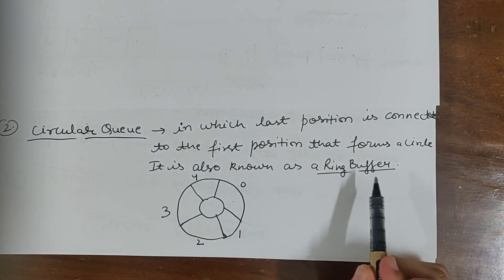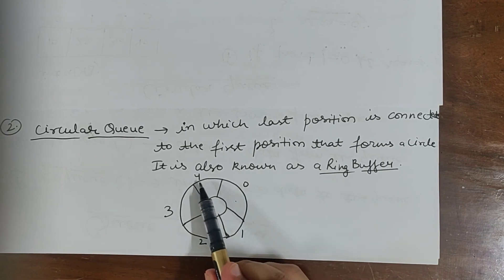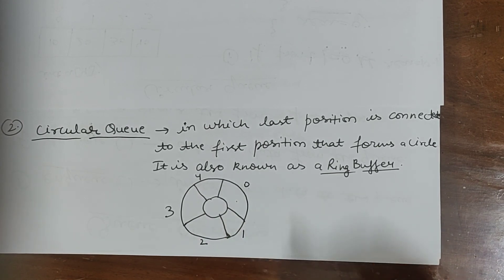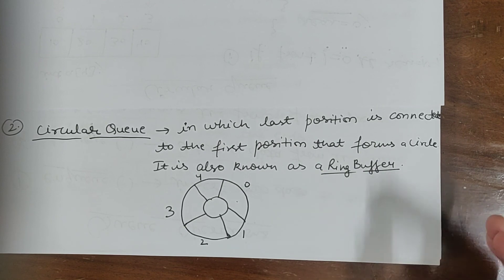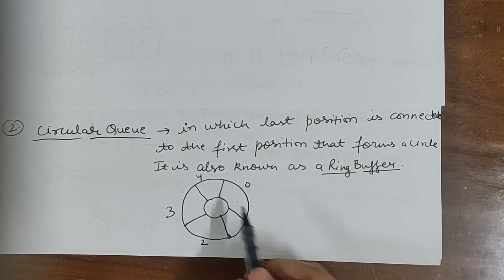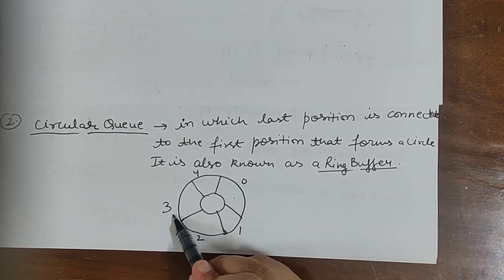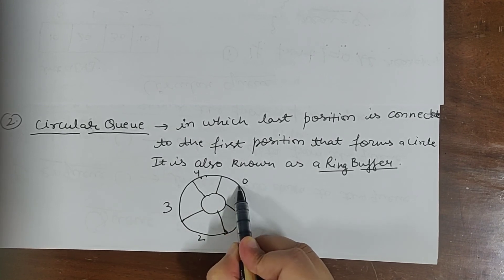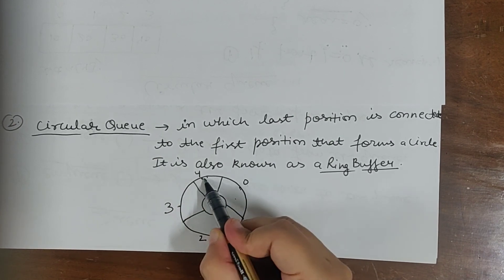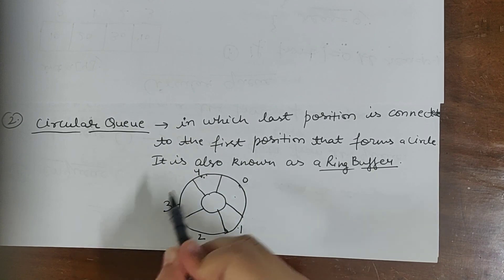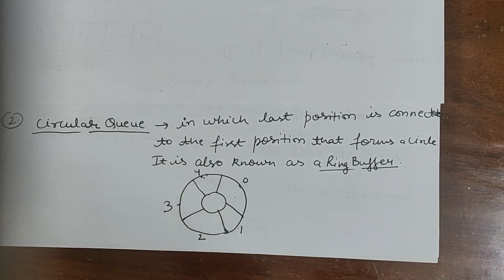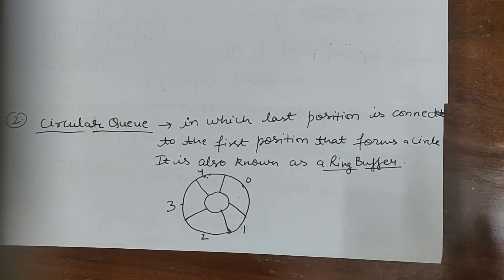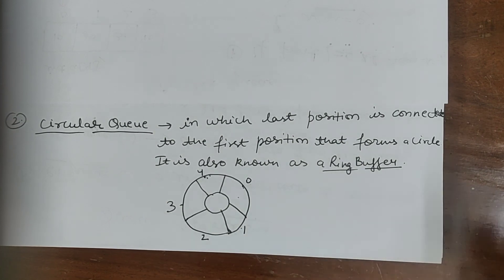In the ring buffer, the last position 4 connects to next position 0. When I say rear plus plus at position 4, rear becomes 0, not 5. Then it goes 0, 1, 2, 3, 4, and again 0. But front must not be 0 for us to do insertion. The condition is: front is not equal to 0 and rear equals n minus 1. When this condition is met, you set rear to 0.